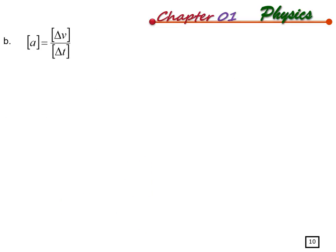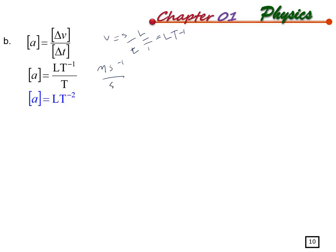For acceleration, it equals velocity over time. Velocity is L over T, so acceleration is (L over T) divided by T, which gives L over T squared. The unit is meter per second squared. Always refer back to the base quantities and their units.